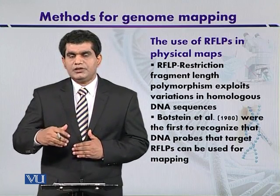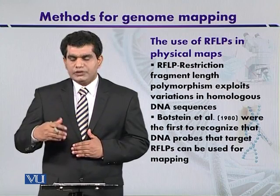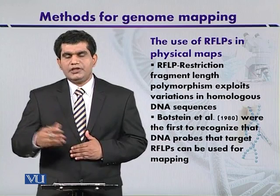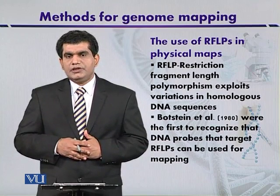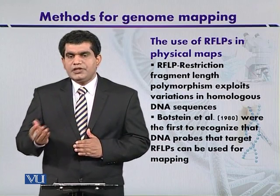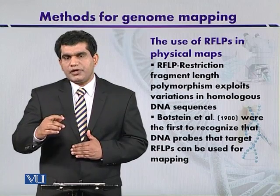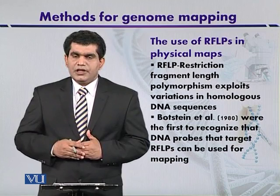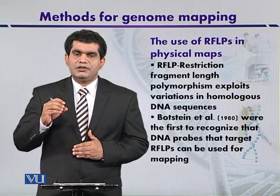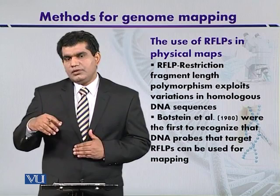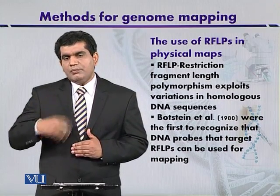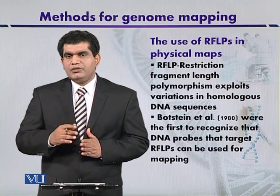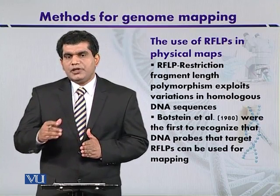This technique was first introduced around 1918 by Bautstein and his co-workers. He exploited DNA probes for this purpose, suggesting that DNA probes can bind with the complementary site in the restriction fragments, and then we can map the genomes.